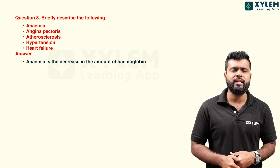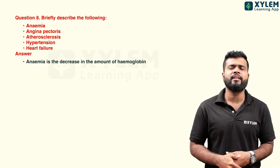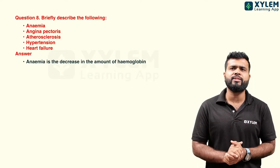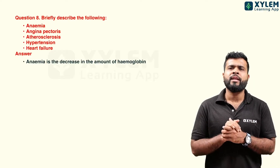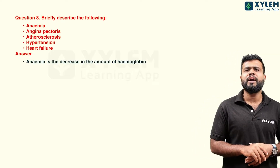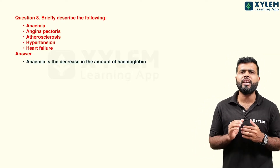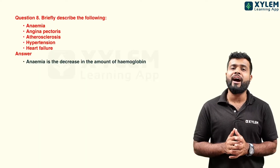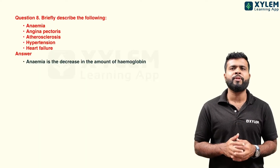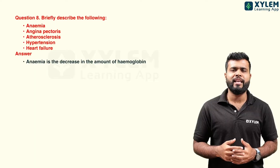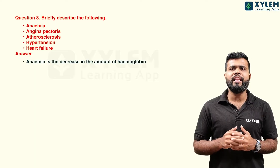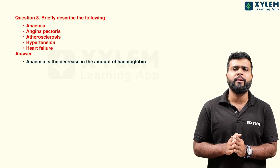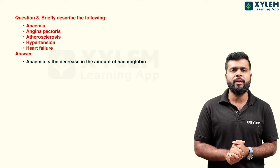Thalassemia and sickle cell are the same type of anemia. In these conditions, hemoglobin is not properly present in the body. This is anemia. The normal hemoglobin level should be 15 mg per 100 ml. If it falls below this, it is anemia.